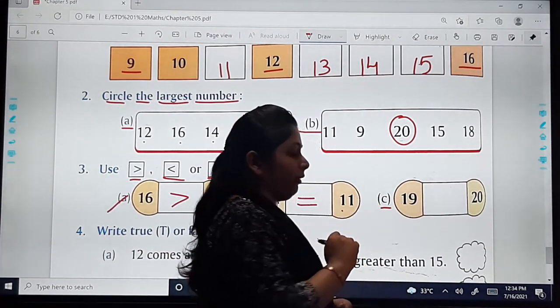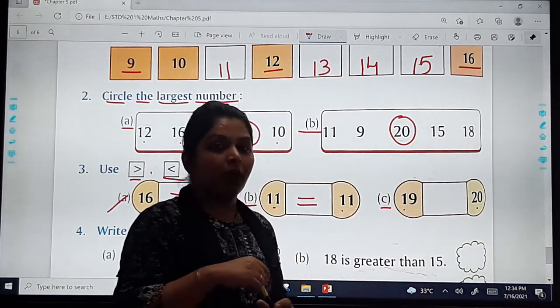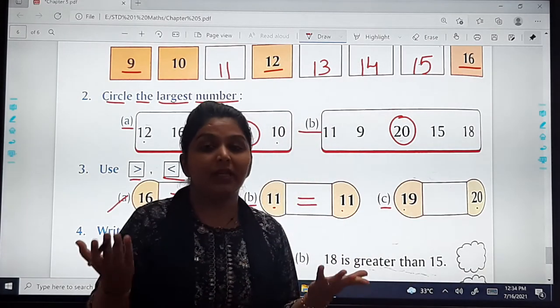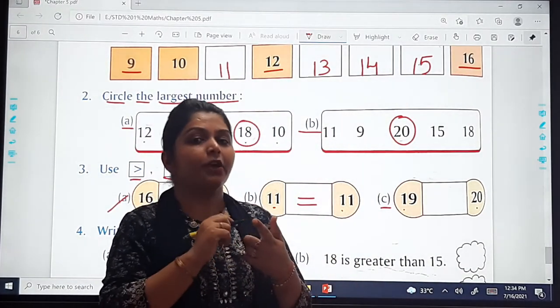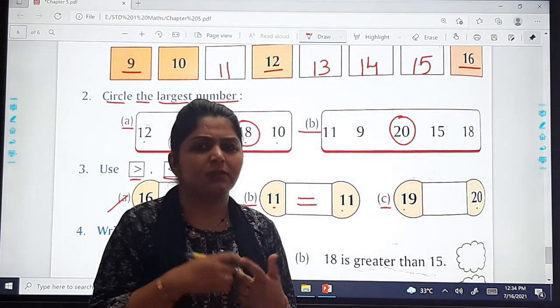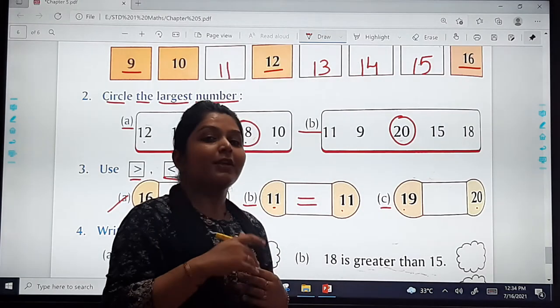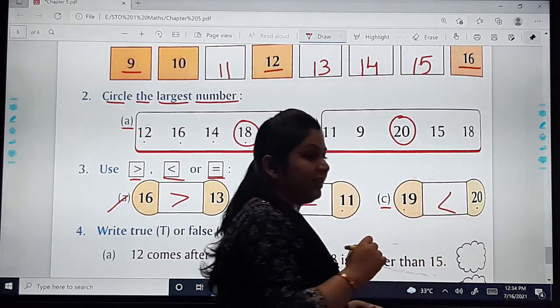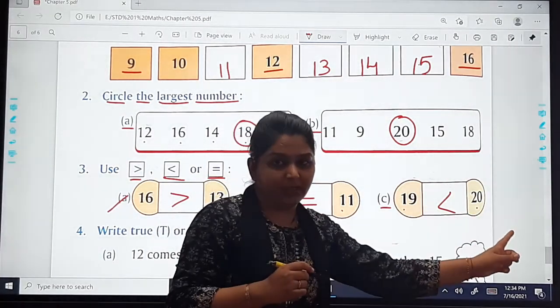Now let us see the third one: 19, 20. On one side it is 19 and on the other side it is 20. So which sign will come? Greater than or smaller than? Tell me fast. Ma'am is waiting. Yes. So, smaller than. Very nice. What we will say? 19 is smaller than 20.